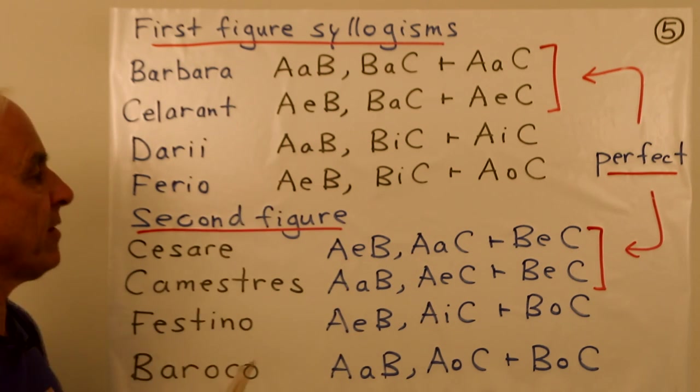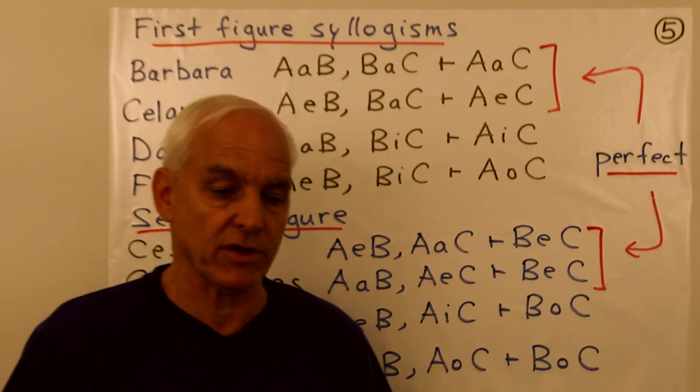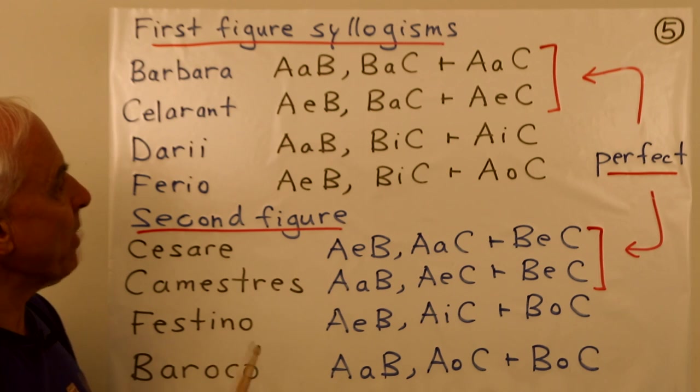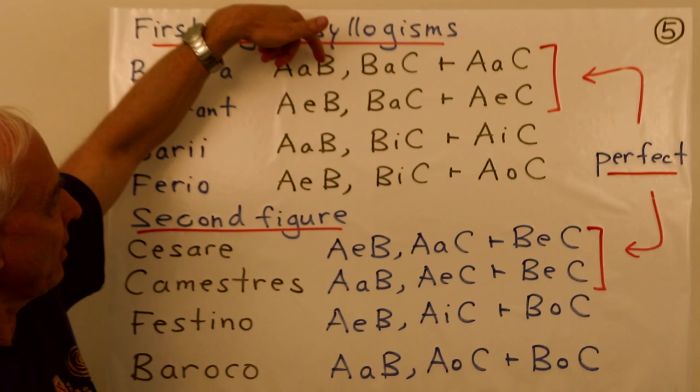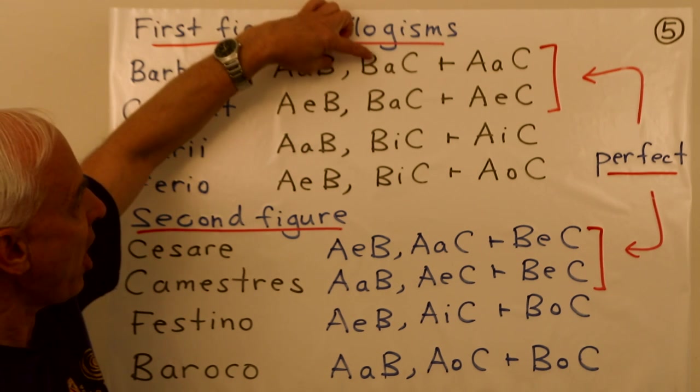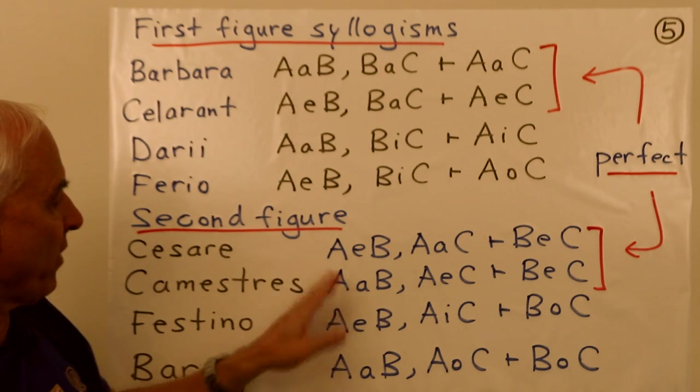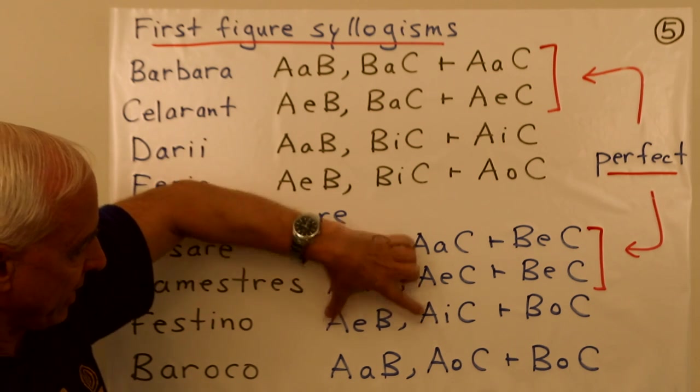And I remind you that there are several families of them, certain figures. First figure syllogisms, second figure syllogisms, third figure syllogisms, and so on. And those are categorized by the nature or the form of the premises that we take. So here, the premises, there's always two premises. They have a kind of a common element, here and here, here and here, here and here. Over here, the common element is the first one. A's, A's, A's, A's. And there's also third figure ones.